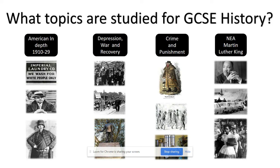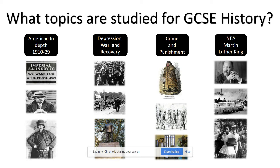In the Depression, War and Recovery unit, we look at Britain in the 1930s and the severe depression that hit, which resulted in hunger marches and extreme poverty caused by the high unemployment rate. We look at the impact of the Second World War, covering the Blitz and evacuation, as well as analysing whether Britain was prepared for war by 1939.